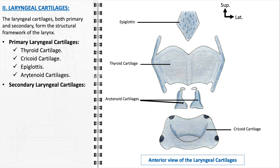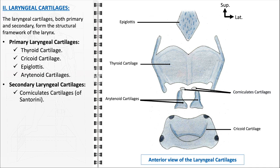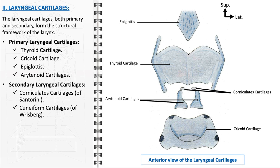The secondary laryngeal cartilages include the corniculate cartilages of Santorini, located at the apex of each arytenoid cartilage — these small cartilages help to anchor and support the vocal cords and aryepiglottic folds — and the cuneiform cartilages of Risberg, rod-shaped cartilages embedded within the aryepiglottic folds. They provide additional support to the laryngeal structure, particularly the epiglottis, and help maintain the laryngeal inlet's shape.